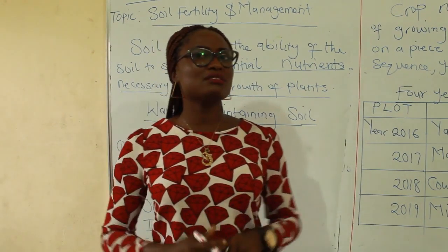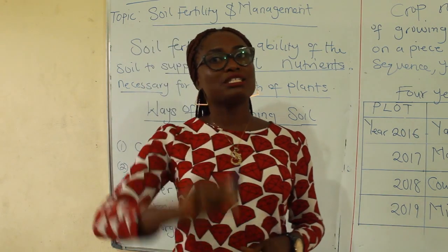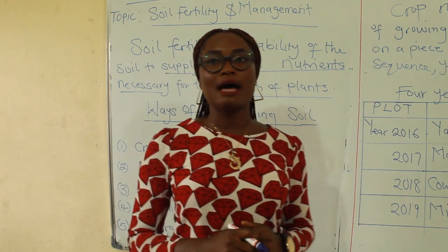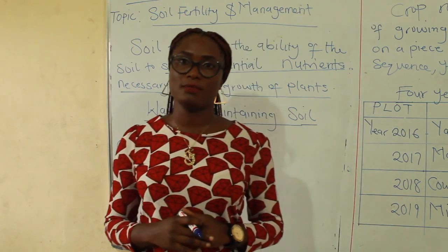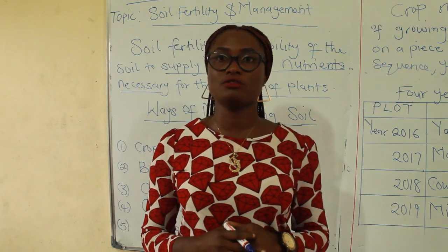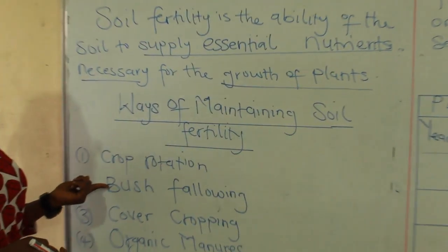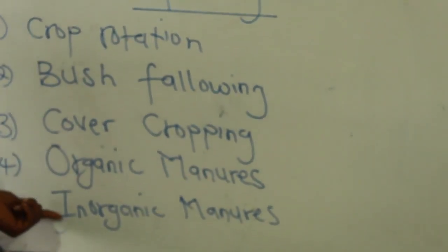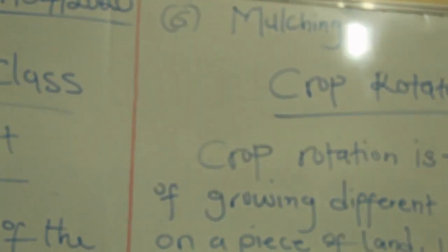The word 'essential' means something that is very important and necessary. So we'll be looking at those nutrients that are necessary for the growth of plants. Now there are different ways of maintaining soil fertility. We have basically six ways: organic manure, inorganic manure, and mulching, among others. These are the different ways of maintaining soil fertility.